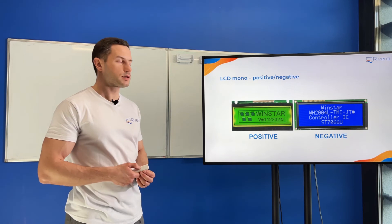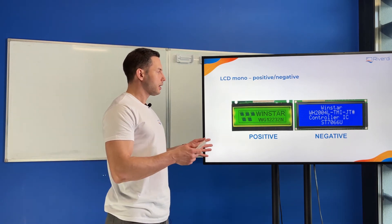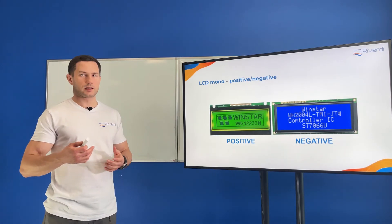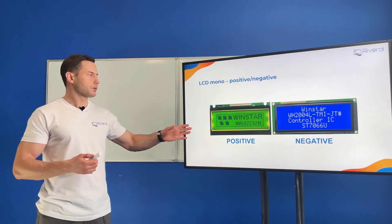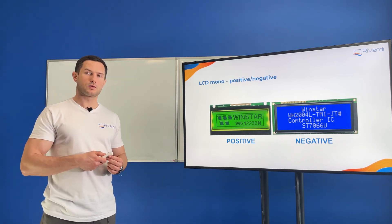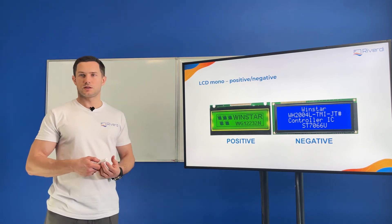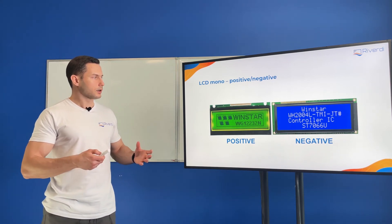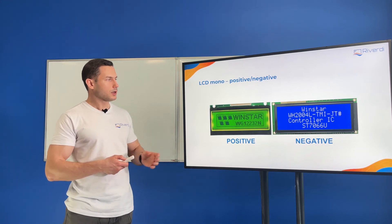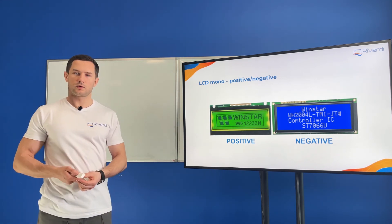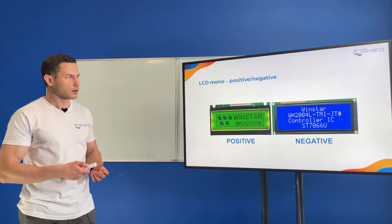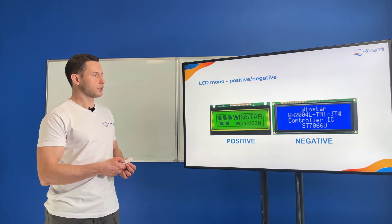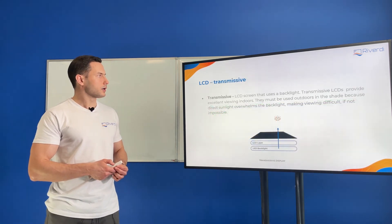In a negative display, you always need the backlight on. So when choosing a display for your application, think about power consumption. If you have a battery-powered device, the positive display is probably better because it allows you to switch off the backlight, which is the main current drain. For a negative display, you cannot switch off the backlight — if you do, you won't see anything — so it's not suitable for battery-powered devices.